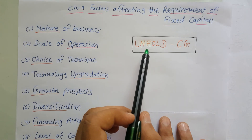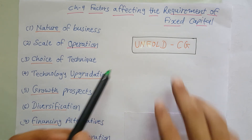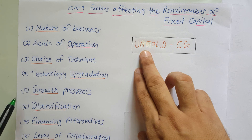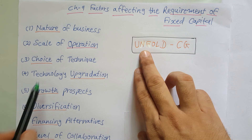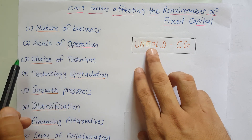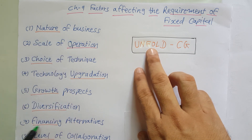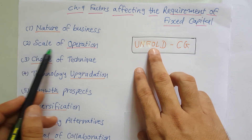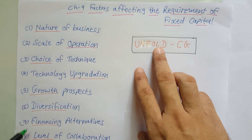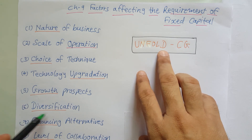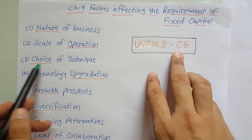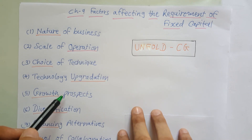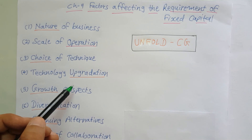You can easily remember these points with the help of the word 'UNFOLD CG': U means technological Upgradation, N means Nature of business, F means Financing alternatives, O means scale Of operation, L means Level of collaboration, D means Diversification, C means Choice of technique, and G means Growth prospects. I hope you understand, friends. Thank you very much.